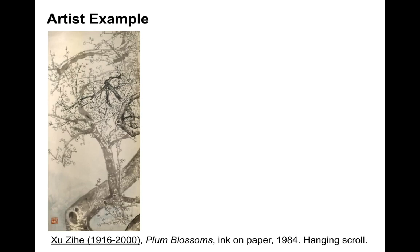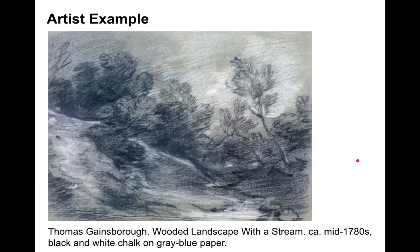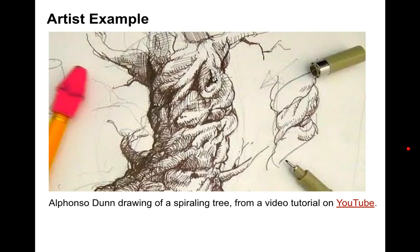Here's an example of a hanging scroll, showing different value changes and details in the darker foreground branches. Here's a Gainsborough image — a drawing using black and white chalk on toned gray-blue paper, a fun way to do a landscape, with hatching and lines in both the white and black. And this is Alfonso Dunn, who draws in ink and is an amazing ink artist. I have his book and have linked to his tutorials on my site — I highly recommend you look into it.